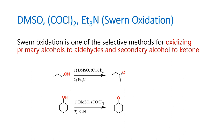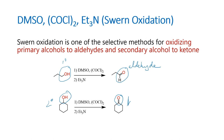Here we see the first example: this is a primary alcohol, so it results in an aldehyde. Likewise, this is a secondary alcohol, so it results in a ketone. No further reactions happen — it does not convert to COOH. That is the advantage of using Swern oxidation conditions.